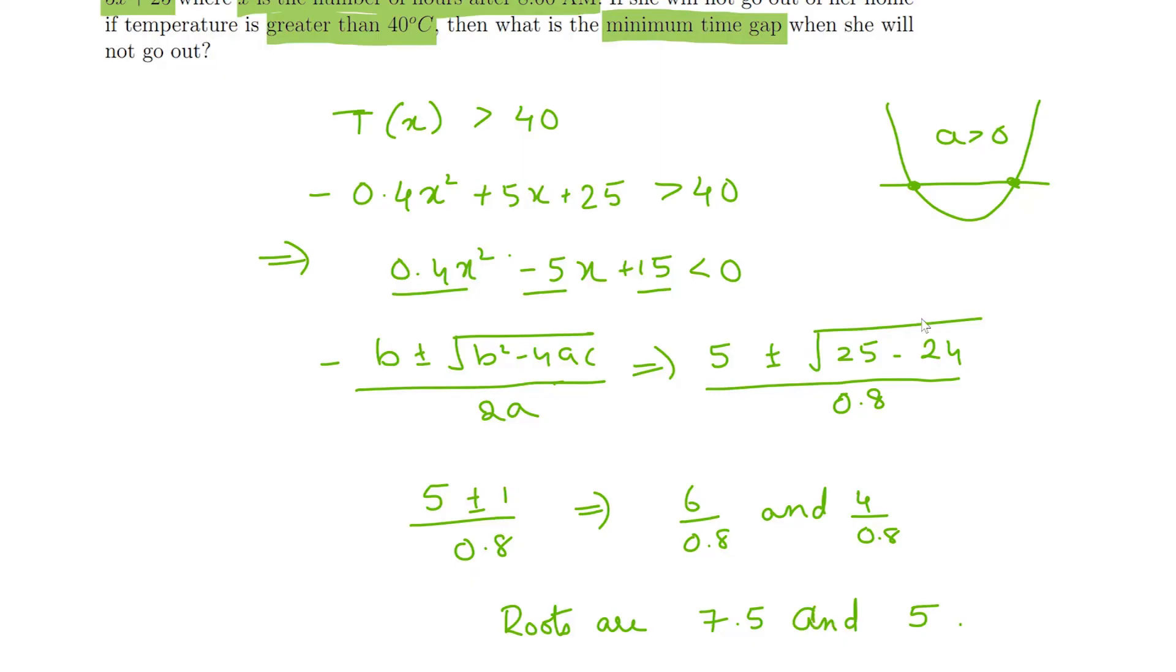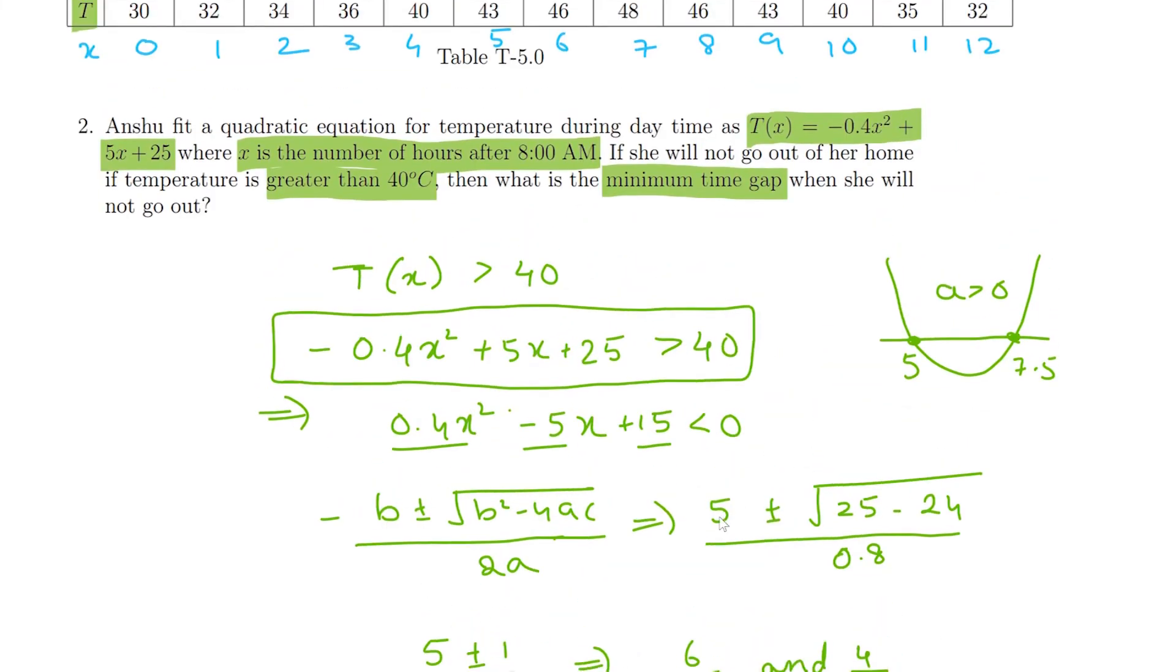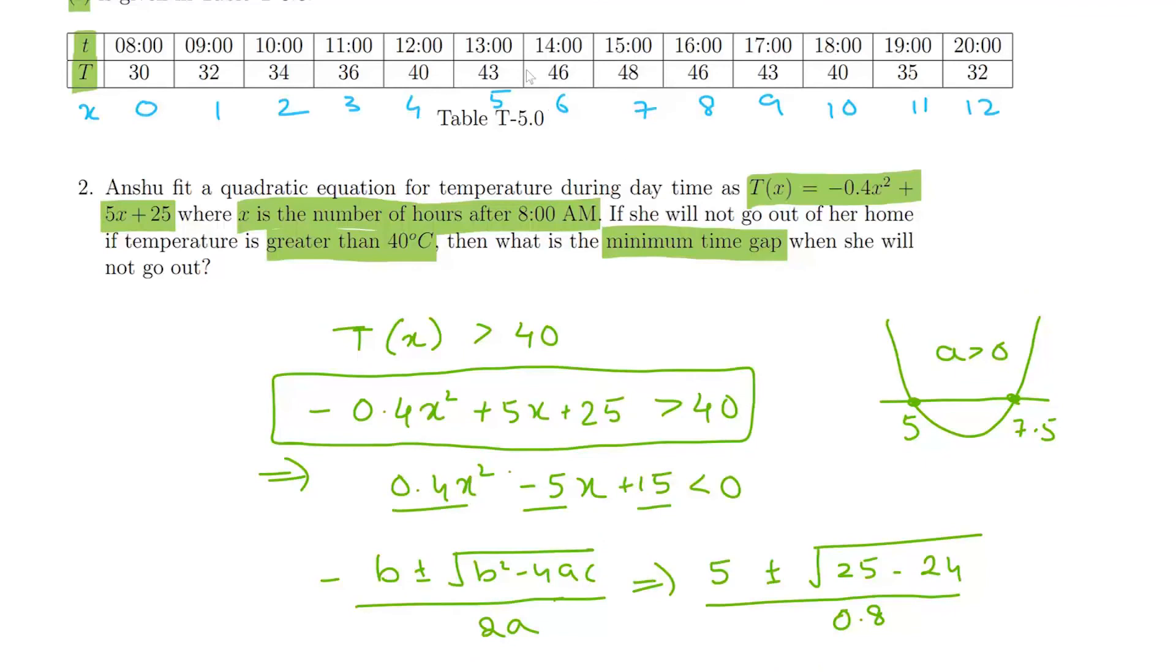So these are the roots 5 and 7.5, and that means this condition, that is the temperature being greater than 40, is satisfied between 5 hours and 7.5 hours. That would be from here till somewhere in between here, that is 15:30.